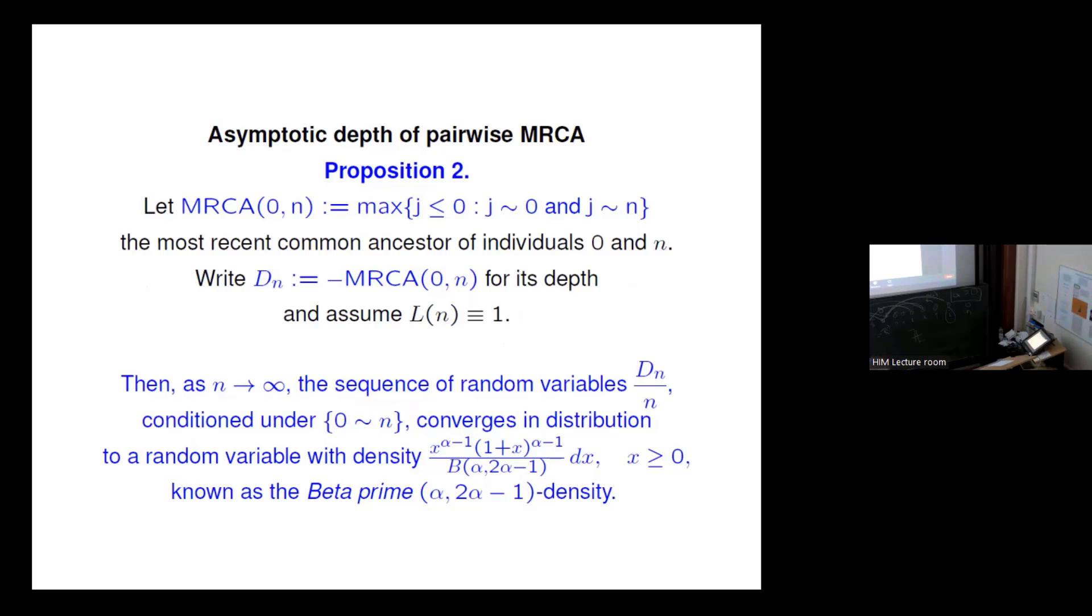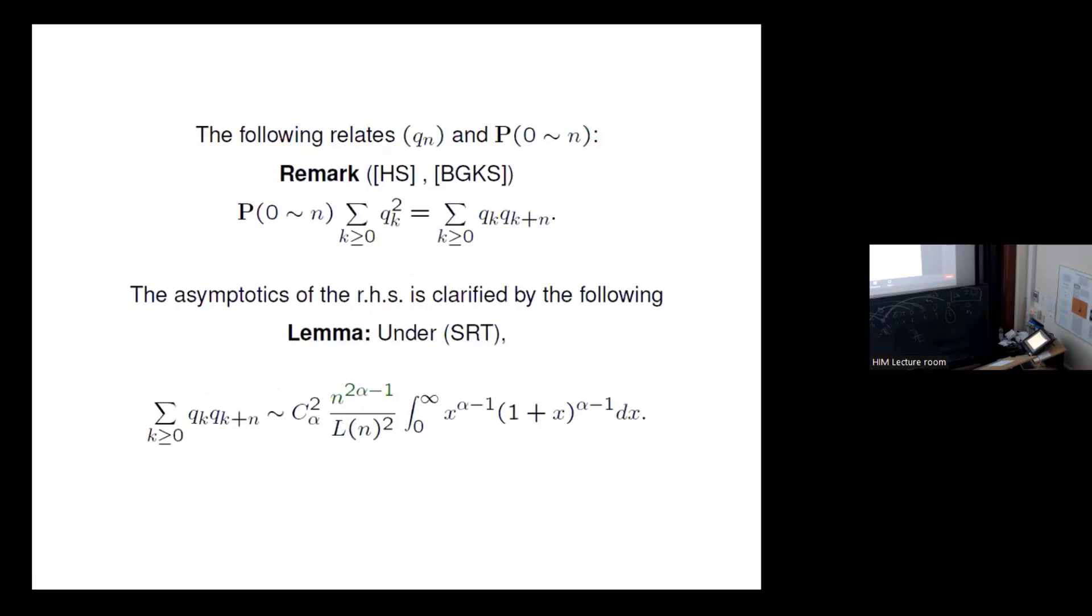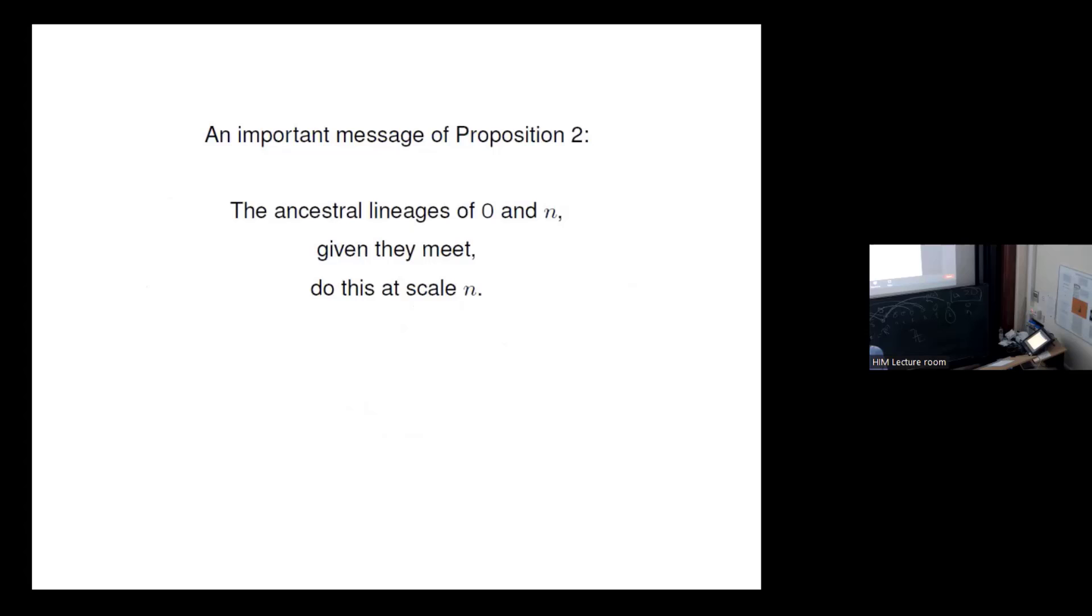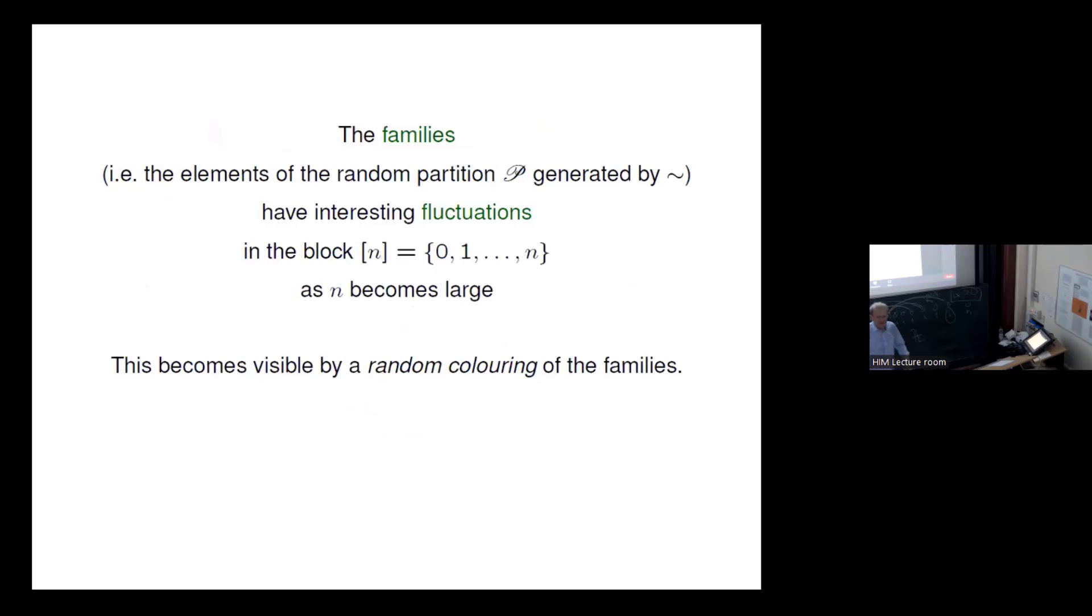Then this is the content of this proposition. The sequence of these random variables D_n divided by n conditioned under the event that they meet converges in distribution to a random variable whose density has the same term which we just saw. This x to the alpha minus one times one plus x to the alpha minus one. It's the same term which popped up here in the lemma. And this is known as the beta prime density. I did not know this before this. And you think of the beta as a quotient of two gammas, a gamma divided by the sum of two gammas, and the beta prime is just the quotient of two gammas, not one gamma divided by the sum of two gammas but the quotient of two gammas, one having one parameter and the other having the other parameter.